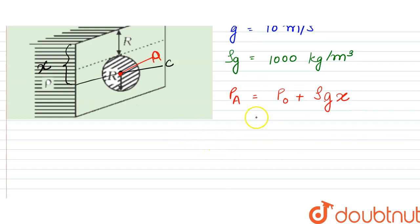So that would be the amount of pressure. That would be equal to 10 to the power 5 plus 10 to the power 3 into 10 into 2. So that would be equal to 12 into 10 to the power 4 pascals.